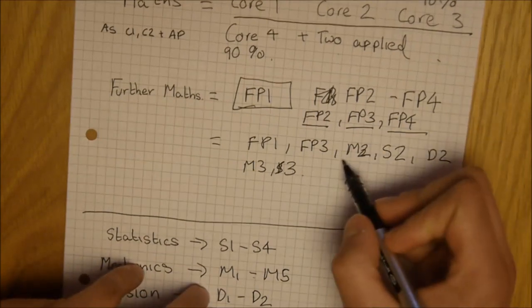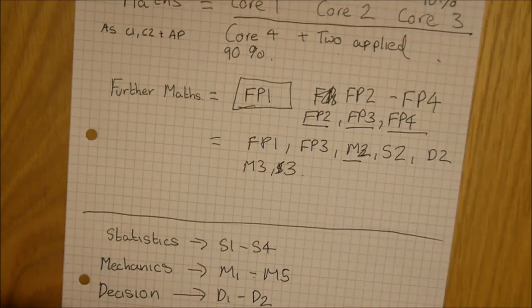So you need 90% in any other module that you do for A2. The only three AS modules are S1, M1, D1, as I've said.